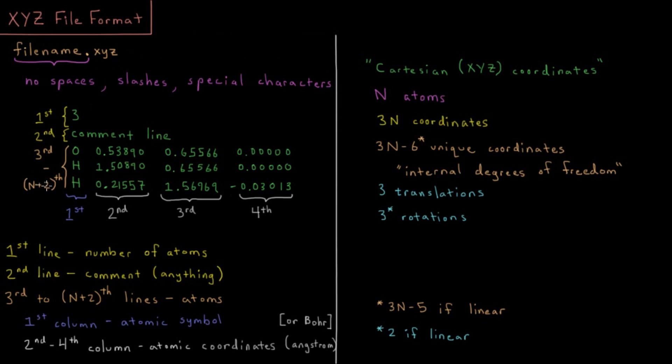Alright, so what should we see on the inside of this file? We're going to see first on the first line there's only one thing, and that is an integer number that is the number of atoms in our molecule. So in this example, this is water. Water has three atoms, O-H-H, so I say three for the number of atoms on that first line.